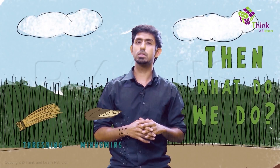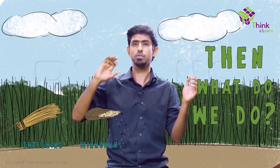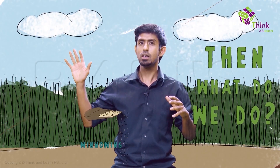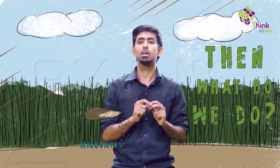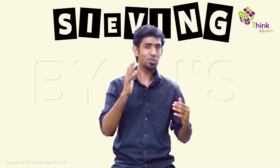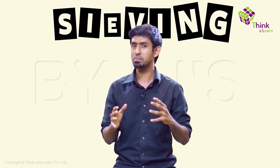We think maybe we can thresh it, but they're not even connected — there's nowhere to hold onto, it doesn't make any sense. Maybe we can winnow, but the problem is both of them aren't too different in their weights. So when we drop them, they're both going to fall in the same place and they're not going to separate. So none of the things we already know is going to help.